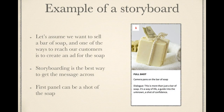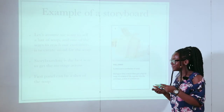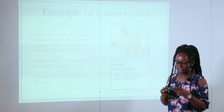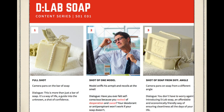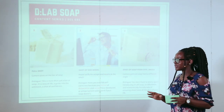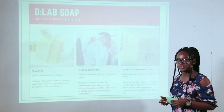We're going to have an example of a storyboard. Assume you want to sell a bar of soap, and we know through our business model canvas that the best channel to reach our customers is using a television advertisement. So we're going to create a storyboard detailing how we want to sell the soap. We can't make a full storyboard here, but I've outlined the first three panels. The first one is a full shot of the soap — how we want it to look — with dialogue underneath that says: 'This is more than just a bar of soap. It's a way of life, a guide into the unknown, a shot of confidence.' So now I've put that idea there — if I ever forget, the storyboard is there to remind me.